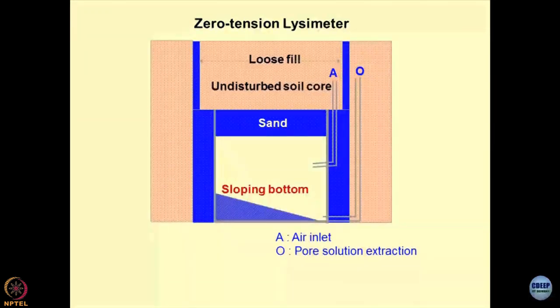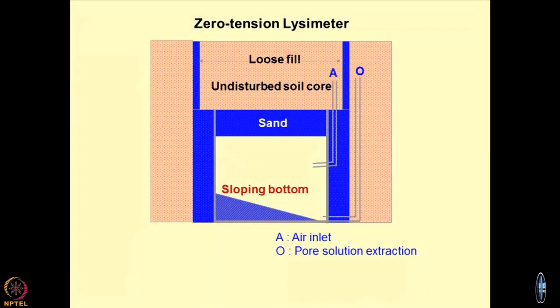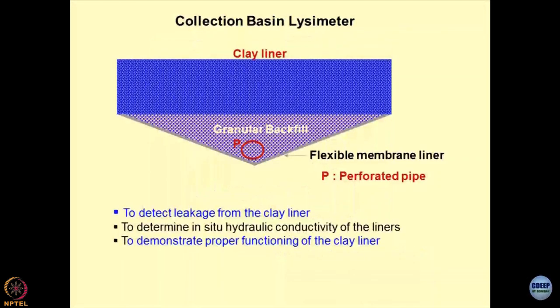This appears to be a very complicated type of system. A sand layer is installed with a sloping bottom, so whatever percolation takes place from the undisturbed soil core passes through the sand, gets collected at the lowest point, and there is an air inlet and an outlet provided. These systems were designed and used at one time, and there is a simple example of what collection basin lysimeters are.